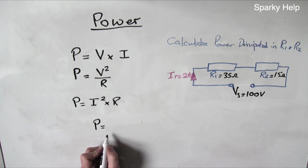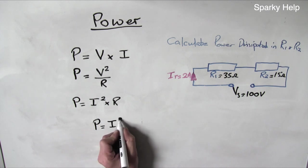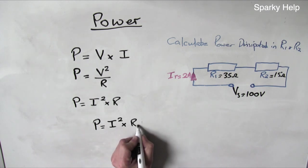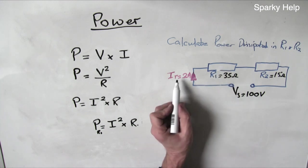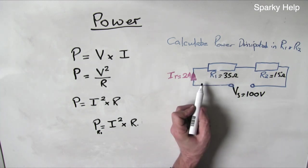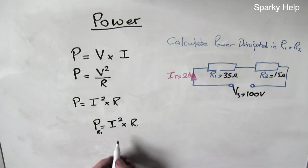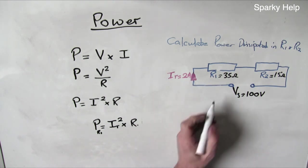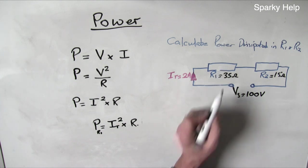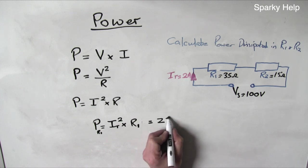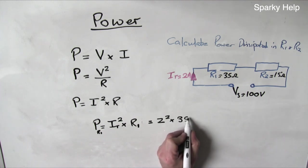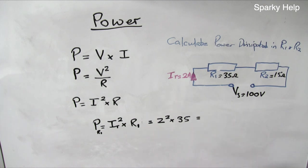But it does depend what you happen to know. So I² times R. For the power in R1 we'll do first. So in order to work out the power dissipated in this resistor, it has to be the current that passes through this resistor. Well it's a series circuit, so current stays the same. So it happens to be IT. We want to find the power in that resistor, so this has to be R1. And if we put those figures in, 2² times 35. And that then will give you your calculation for this one here.